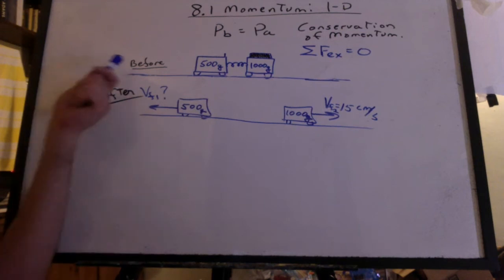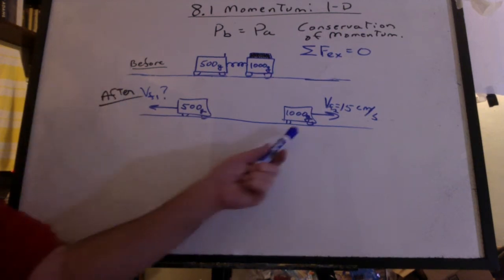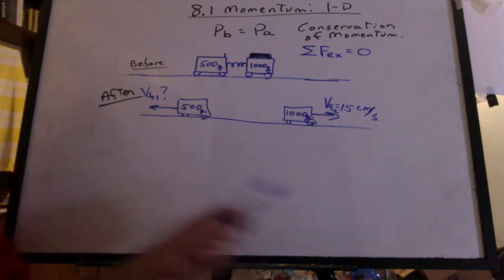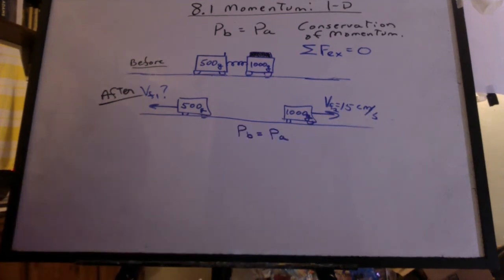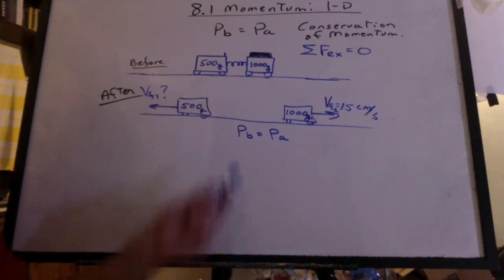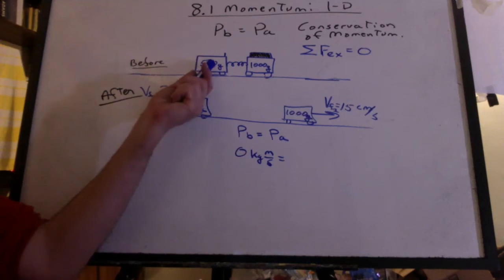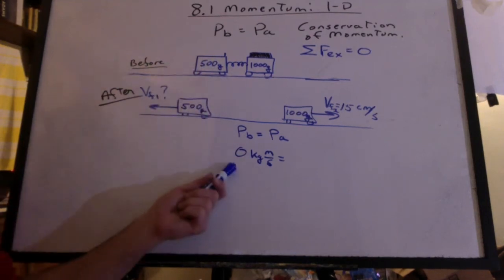Let's just say we have the before picture, the after picture, and we see the 1000 gram cart moving at 15 centimeters per second. What would be the velocity of this cart? We can use conservation of momentum and say the momentum before is equal to the momentum after. Before I hit the trigger, they're both at rest. So we have zero momentum.